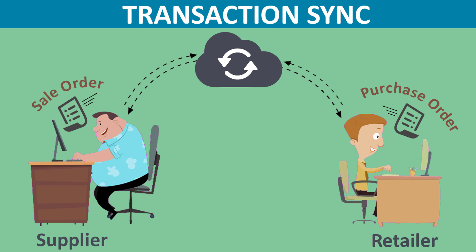Hello friends and welcome to this video in which I would like to tell you about a very beneficial and time-saving feature of Mark Software — Supplier to Retailer Transaction Sync. This feature is a two-way communication between supplier and retailer through which they can carry out transactions through computer. It receives purchase orders from the retailer's Mark Software through cloud and automatically converts them to sale orders in the supplier's Mark Software.